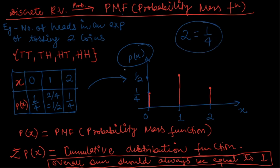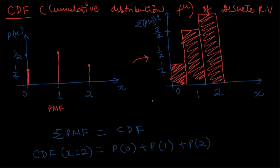The cumulative distribution function (CDF) is common to both the probability mass function and the probability density function, which we will see later. CDF is nothing but the cumulative probability of all the occurrences.